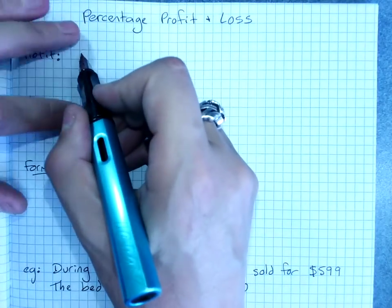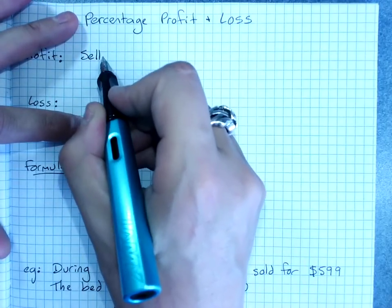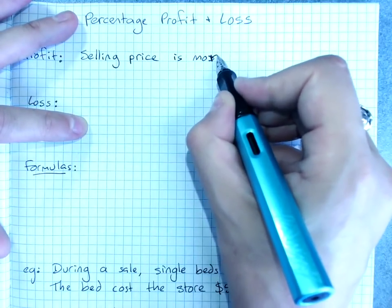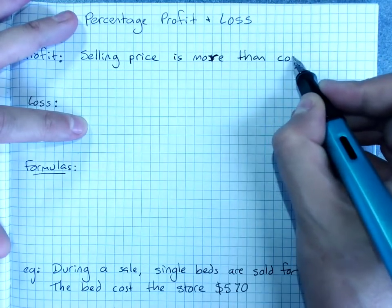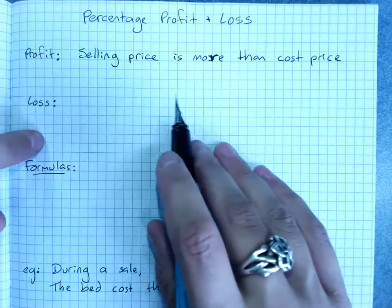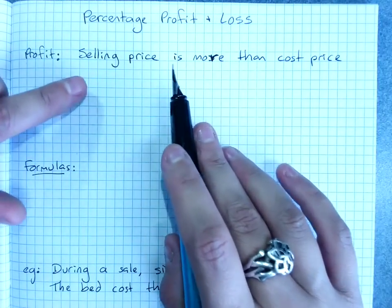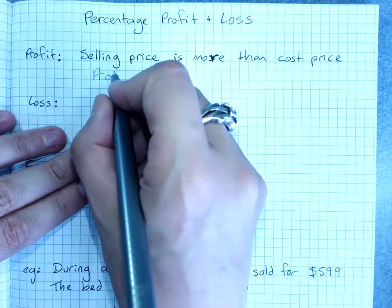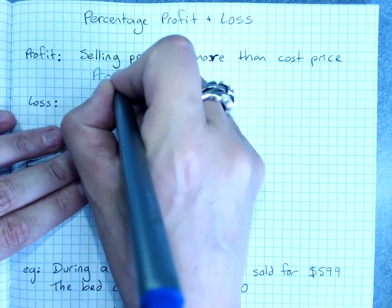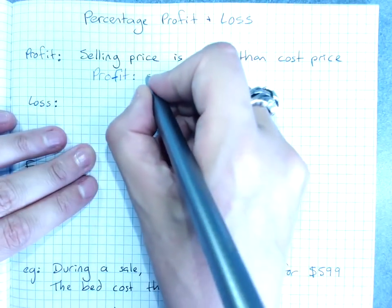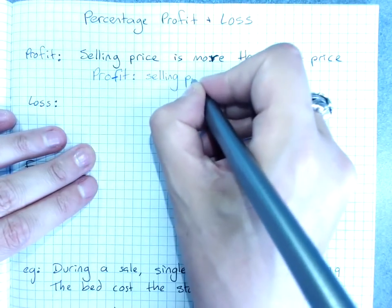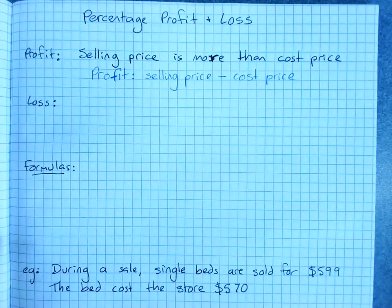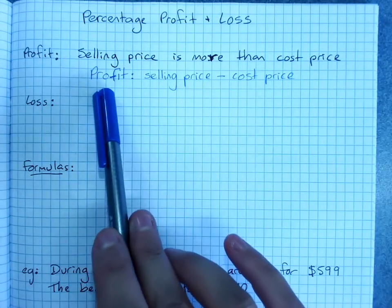So profit happens when what you sell it for, the selling price, is more than the cost price, what you paid for it. So the selling price is more than the cost price. That means you got more than you paid for it. And to calculate profit, this is just the amount of profit. So profit is just selling price minus cost price.